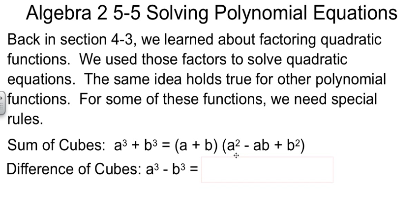Then we'll square the first one, so a². Change the sign from plus to minus. Multiply the two terms, a times b. Always a plus here, and then square the back for the b².